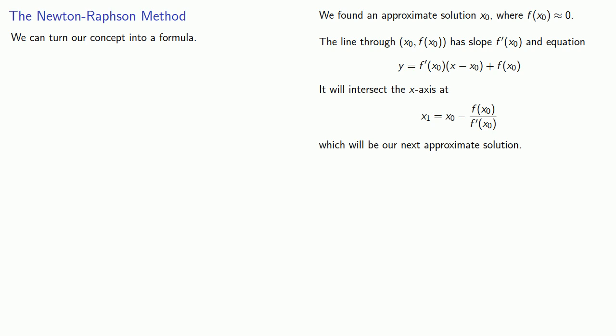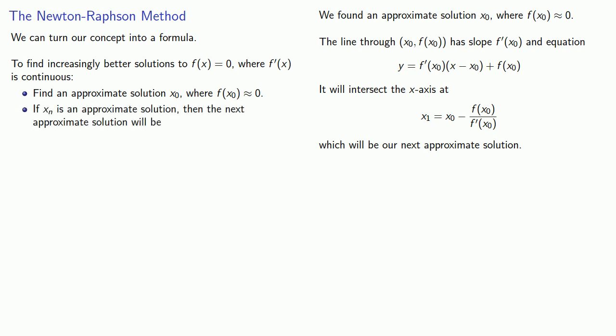We can summarize our steps into a formal method. To find increasingly better solutions to f(x) equals 0, where f'(x) is continuous: first, find an approximate solution x₀ where f(x₀) is close to 0. Then, if xₙ is an approximate solution, then the next approximate solution will be given by this formula.